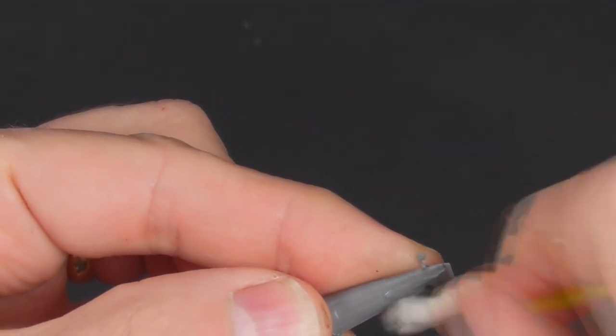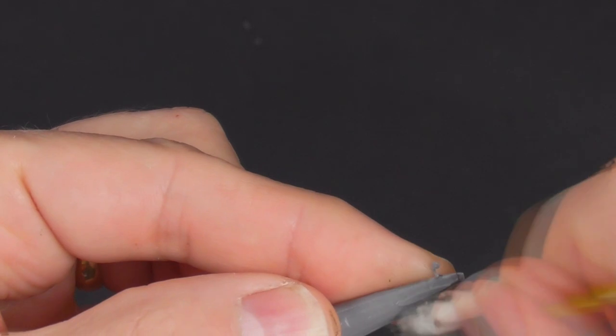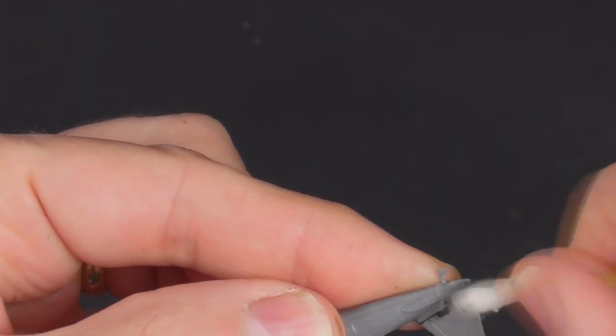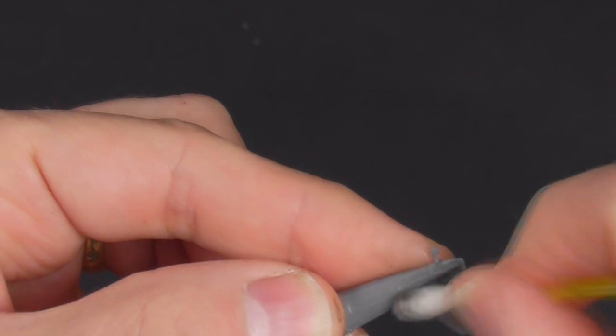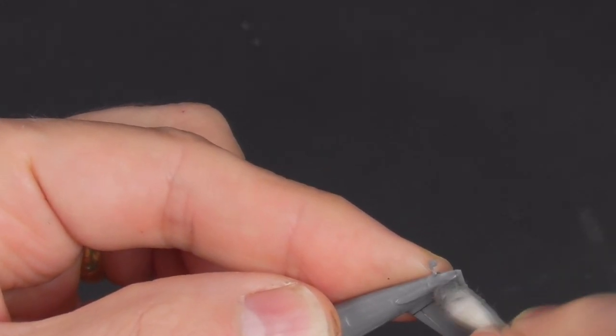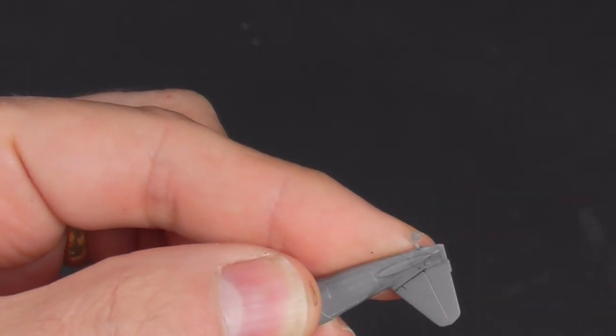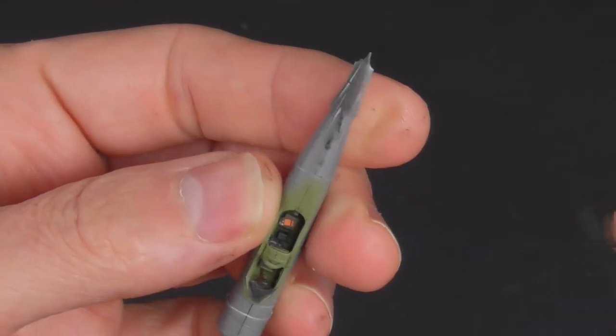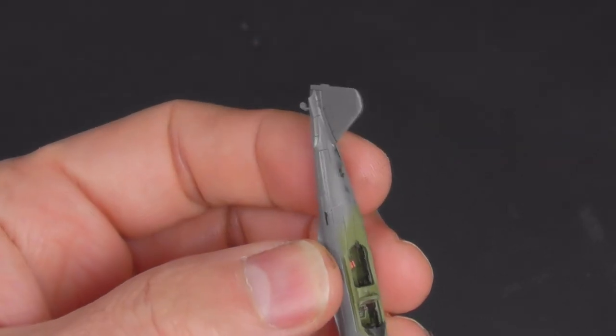A few hairline gaps here at the tail, just dealt with with Mr. Surfacer and a bit of thinner, and this is their normal thinner. I don't recommend using the rapid drying thinners. It's just far too hot. It leaches into the plastic. I've made that mistake before.